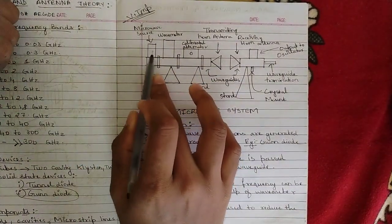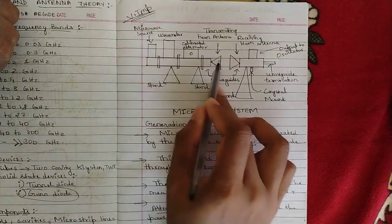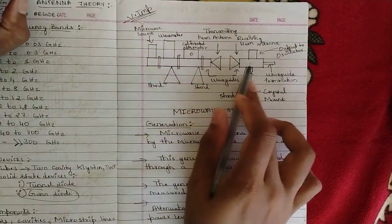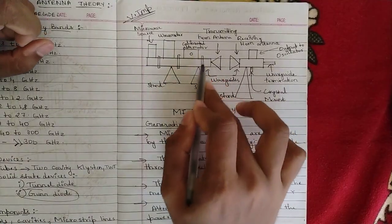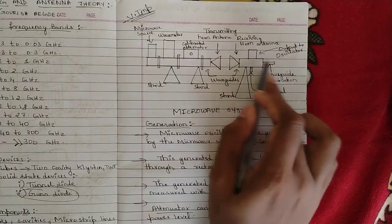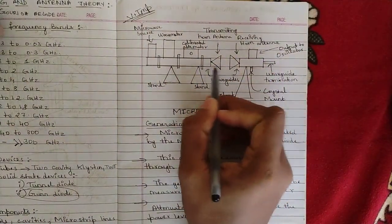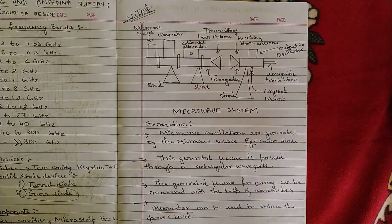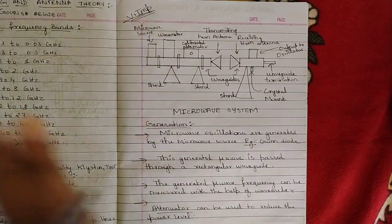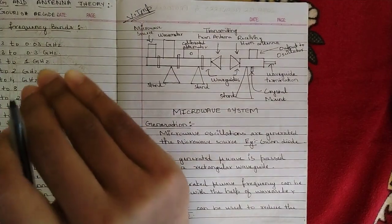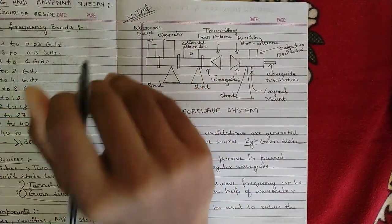The microwave system consists of a microwave source, which passes through a wave propagation cavity, then through a transmitting horn antenna. From there it goes to a receiving horn antenna and the output is passed to an oscilloscope. The rectangular boxes represent wave guides that ensure smooth wave propagation from transmitter to receiver. An attenuator blocks unwanted signals and allows required signals to flow.